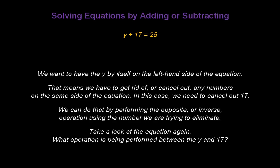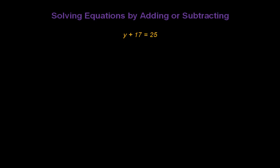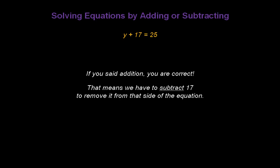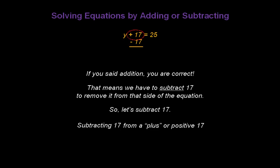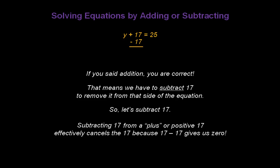Now take a look at the equation again. What operation is being performed between the y and the 17? If you said addition, you're correct. That means we have to subtract 17 to remove it from that side of the equation. So let's go ahead and put subtract or minus 17 on the same side right under the 17.